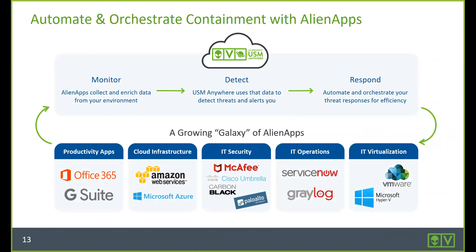With AlienVault you can monitor, detect, and respond using our orchestration tools. We're fully integrated with McAfee, Cisco Umbrella, Carbon Black, and Palo Alto. One of the ways you can detect ransomware is through a bad IP address — using our Alien Apps, if we detect a bad IP address within your environment, we can orchestrate a response to Cisco Umbrella within your environment to immediately block that IP address.